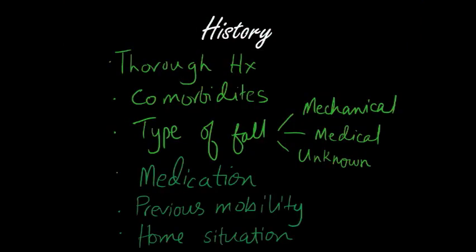As a medical student or junior doctor asked how to manage a patient with a neck of femur fracture, you first want to mention that you'll take a thorough history. You want to ascertain whether the patient has any comorbidities, what type of fall it was — was it a mechanical fall or was there a medical reason, perhaps an MI or a seizure — or was it an unwitnessed fall? Are there any medications the patient's on? Perhaps they're on antihypertensives which dropped the patient's blood pressure and caused postural hypotension, resulting in the fall. You want to know the patient's previous mobility, what aids they were using — a crutch, a frame, or were they fully mobile? And what is the home situation — do they have stairs, who looks after them, are they fully independent, do they have carers?